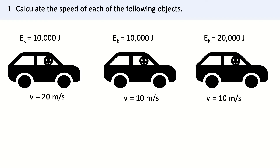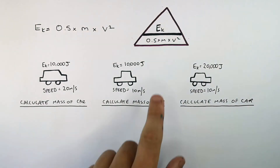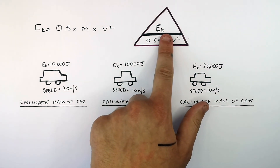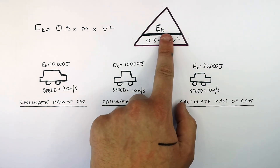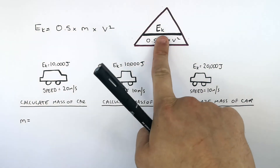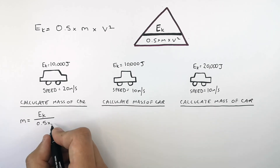This is the problem you will learn how to solve. Press pause to attempt it. The method and the answer will follow. You can really easily rearrange for M. So you cover M, and M will equal kinetic energy divided by 0.5 times V squared.